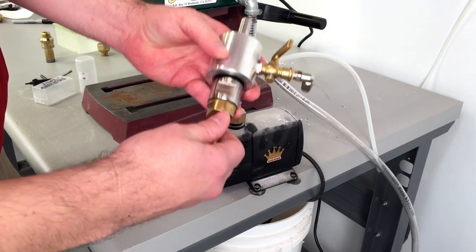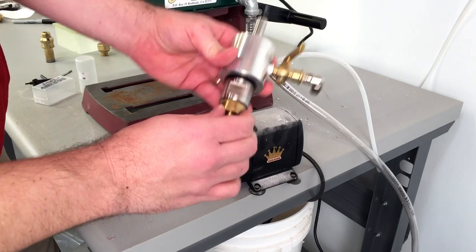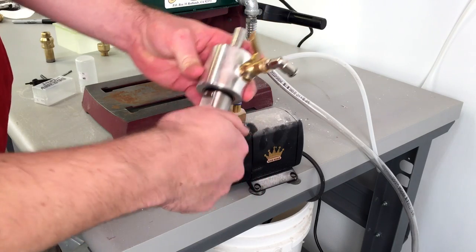You generally only need to finger tight the core drill on there initially, but as it drills it will tighten up, so you will need some wrenches to remove these later.